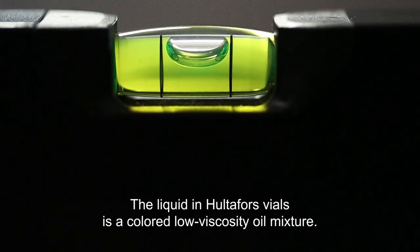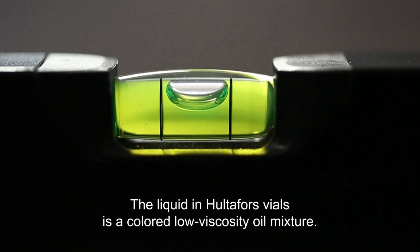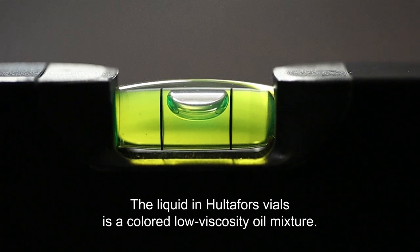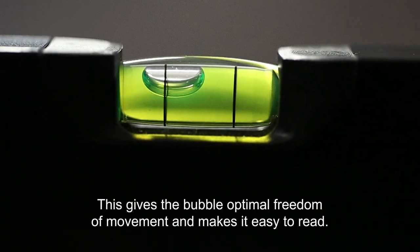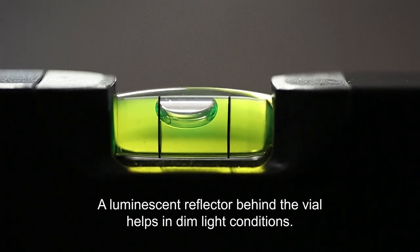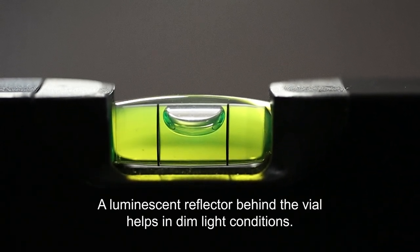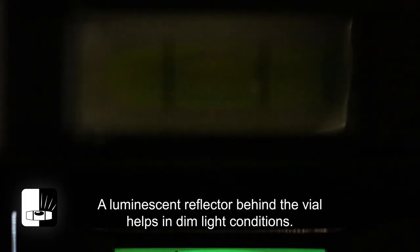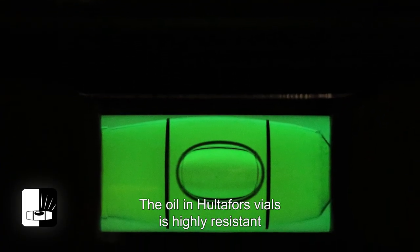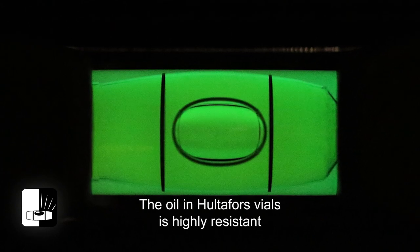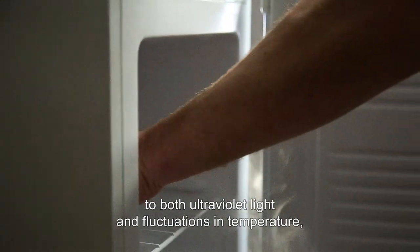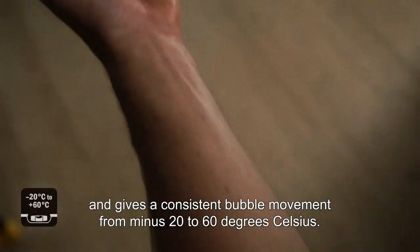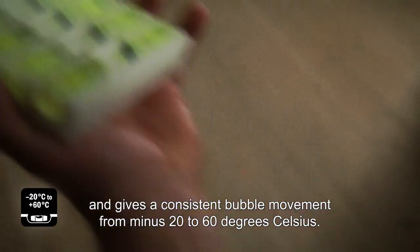The liquid in Hultiforce vials is a colored low viscosity oil mixture. This gives the bubble optimal freedom of movement and makes it easy to read. A luminescent reflector behind the vial helps in dim light conditions. The oil in Hultiforce vials is highly resistant to both ultraviolet light and fluctuations in temperature and gives a consistent bubble movement from minus 20 to 60 degrees Celsius.